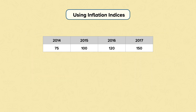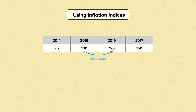Inflation indices are tables of numbers that represent inflation. These can be based on the CPI or the RPI. There is always a base year where the value is 100. The numbers either side of the base year show the relative inflation. In 2016, the index is 120, so the prices were 20% more than in 2015. Another way to say this is that they were 1.2 times more.